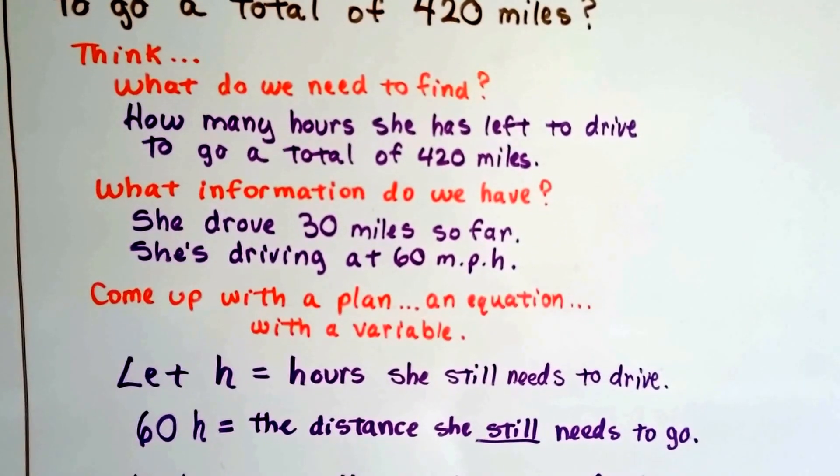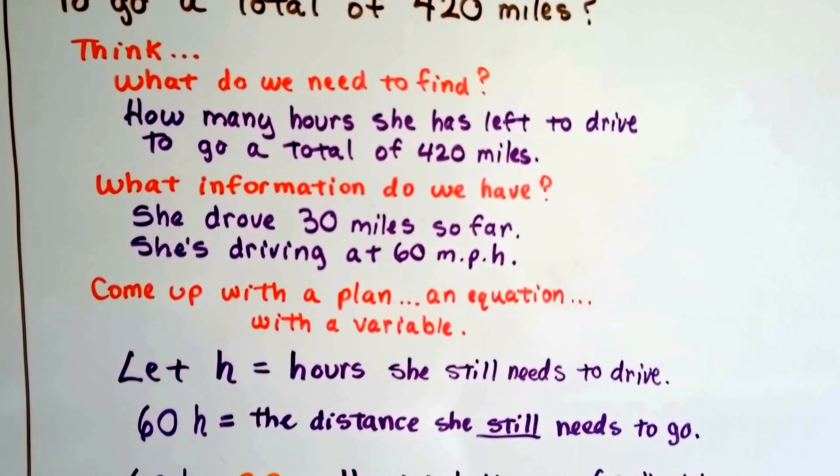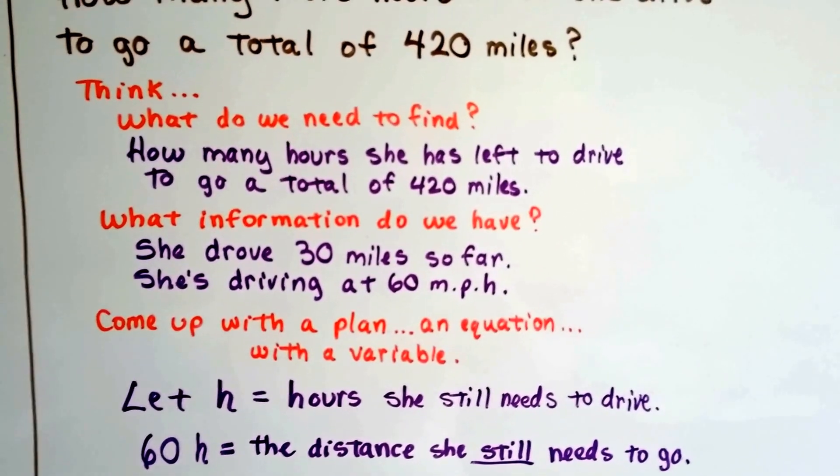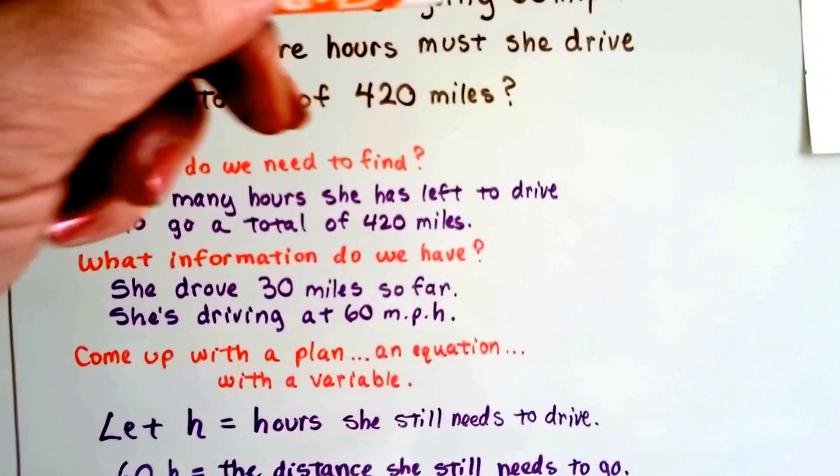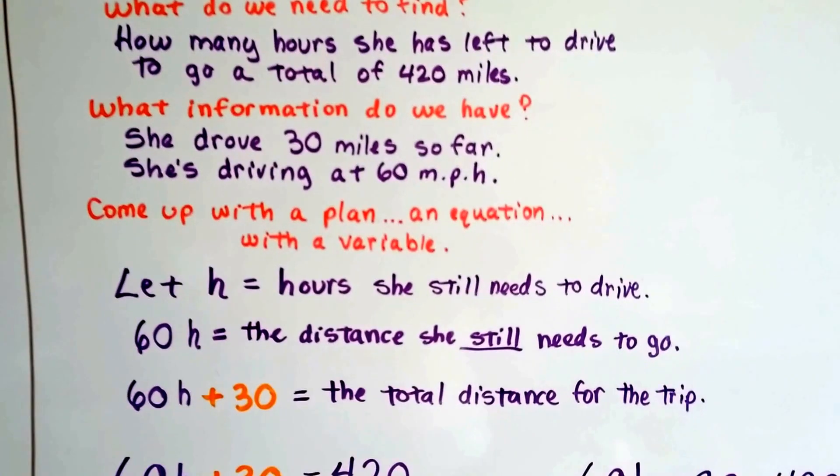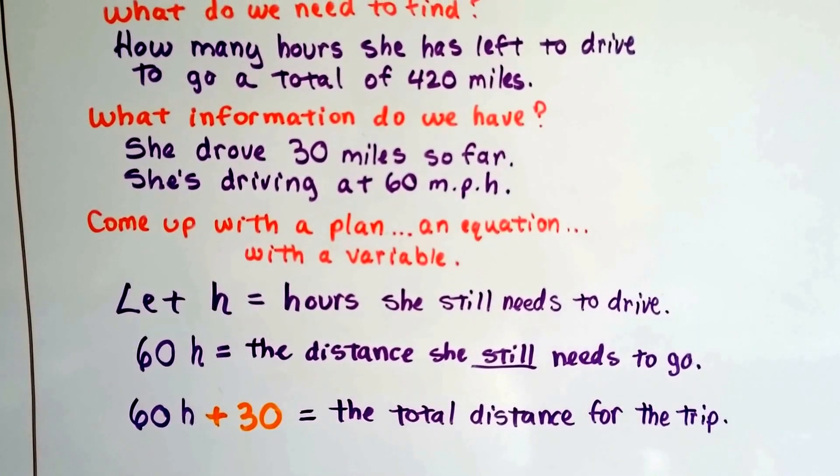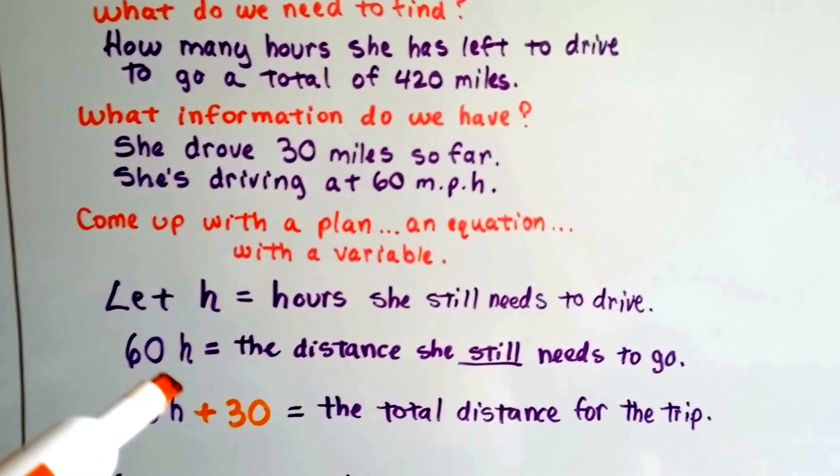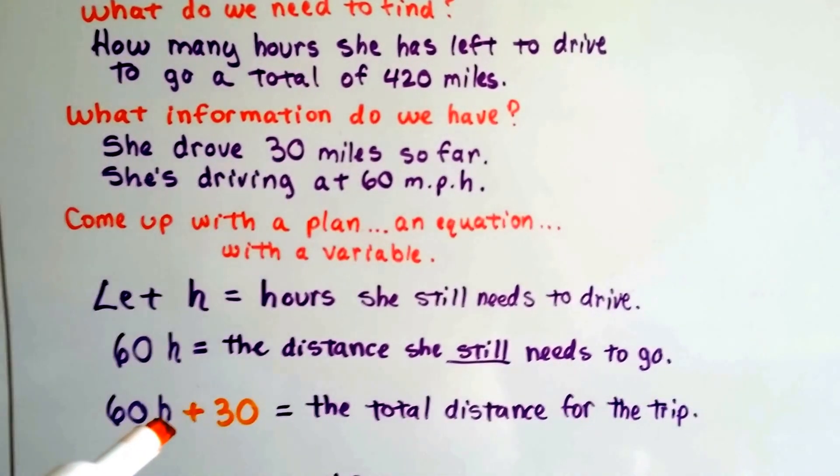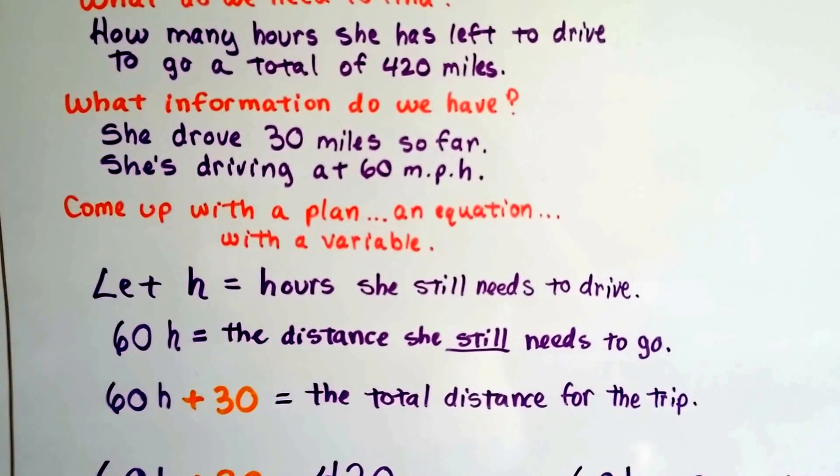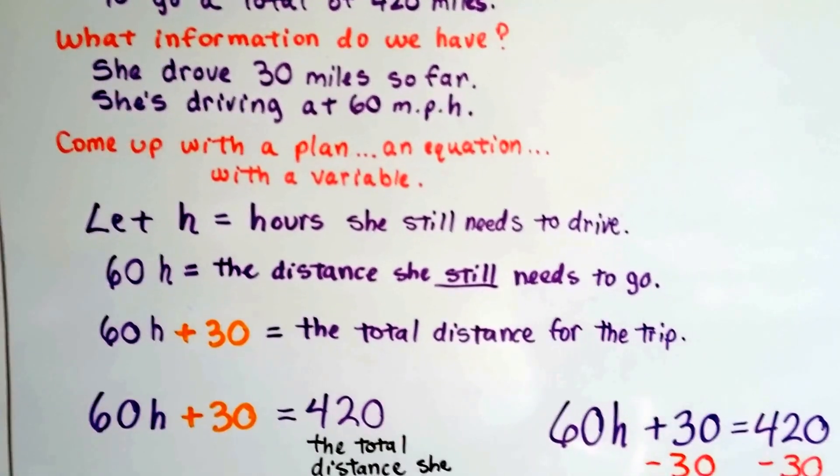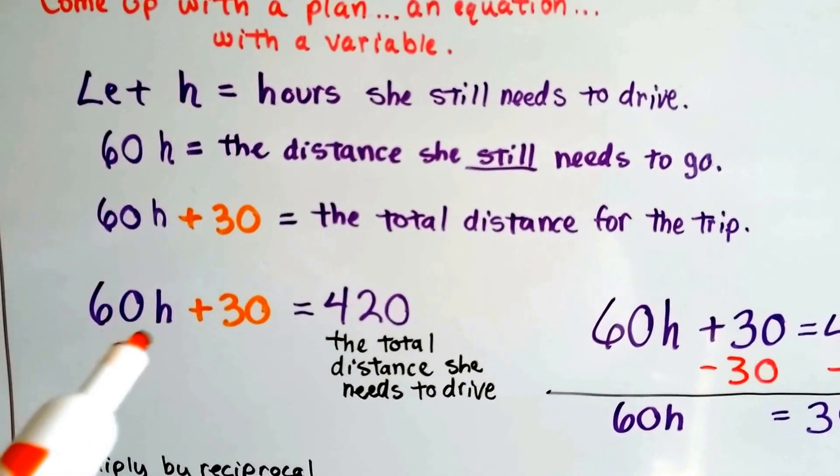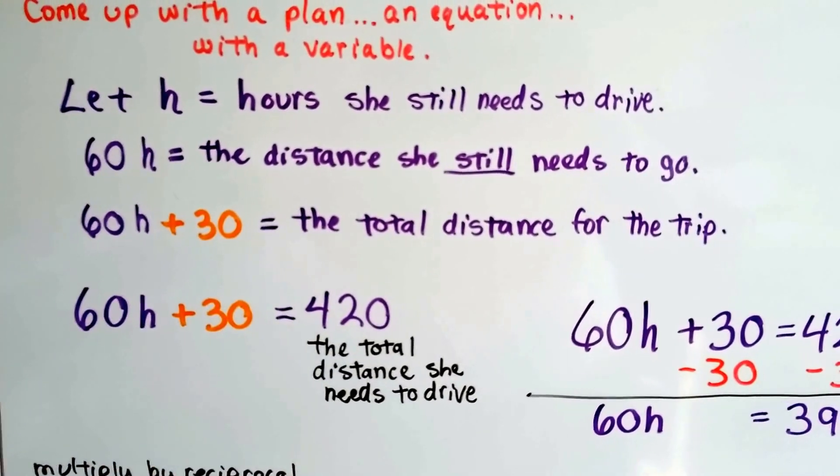We have to come up with a plan, an equation with a variable. So let's let H equal the hours she still needs to drive. And 60H is going to be the distance she still needs to go because she's going 60 miles per hour. 60H plus 30 is the total distance for the trip because that's the speed she's going. That's the time that it's going to take her to get there. And that's how much she's gone so far. Now we know that the total trip is 420 miles. So now we've got 60H plus 30 equals 420.